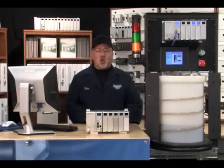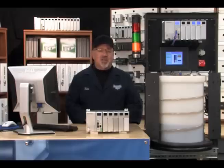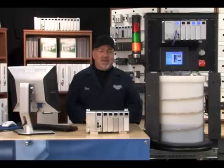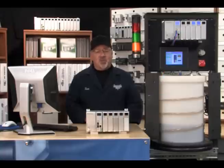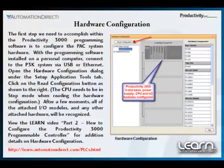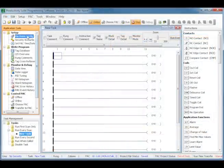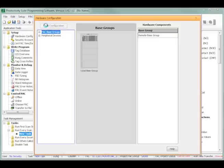Before we start the actual programming of our application demo, we need to configure the Productivity 3000 system hardware. With the programming software opened on a personal computer and connected by way of either a USB cable or Ethernet communications, and online with the CPU, open the hardware configuration dialog window under the Setup Application Tools tab. Make sure the Productivity 3000 CPU module is in Stop mode and then click the Read Configuration button.